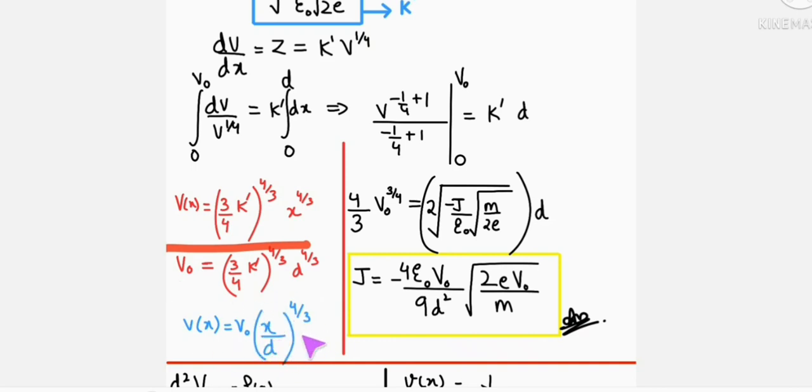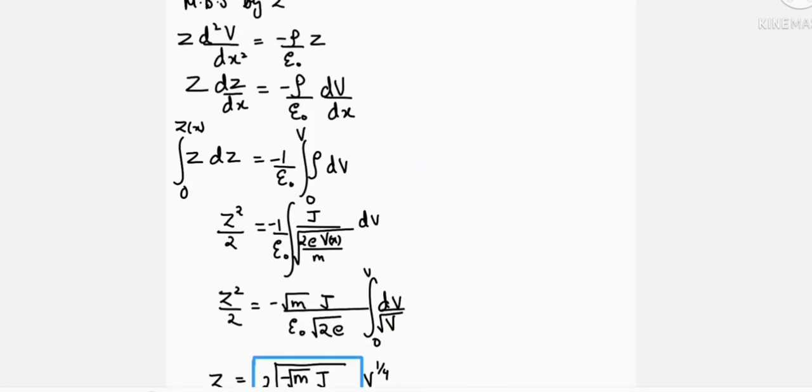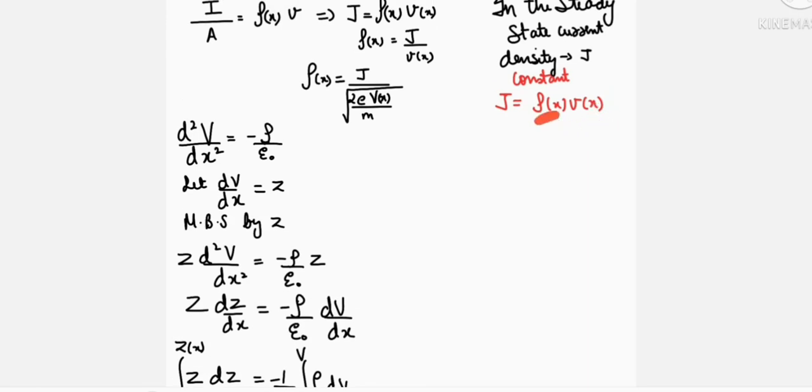From here, J is equal to minus 4 epsilon naught V naught by 9 D square, under root 2 E V naught by M. So this is current density.